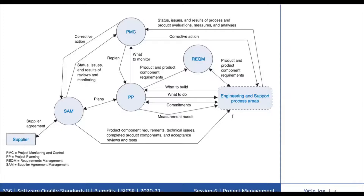The Requirements Management process area maintains requirements and describes activities for obtaining and controlling requirements or requirement changes, ensuring that other relevant plans and data are kept correct. It provides traceability of requirements from customer requirements to product requirements and up to component requirements. Requirements management ensures that changes to requirements are reflected in project plans, activities, and work products. The cycle of changes can affect the engineering process areas as well. Thus, requirements management is a dynamic and often recursive sequence of events.